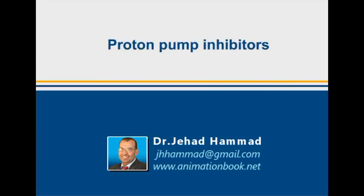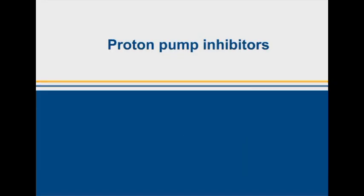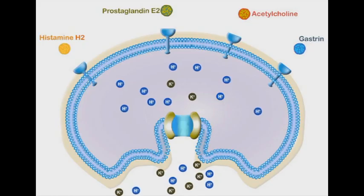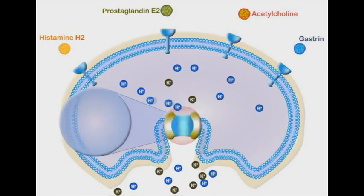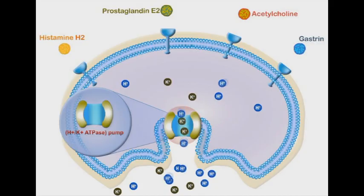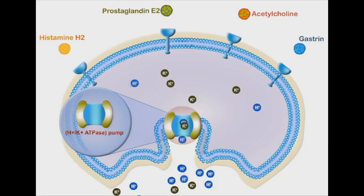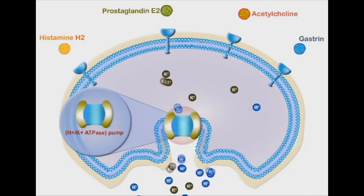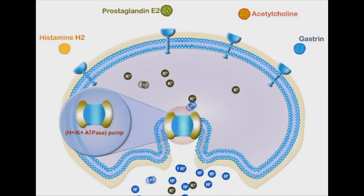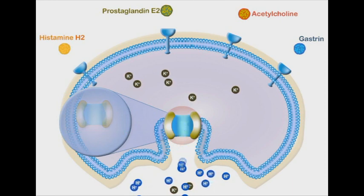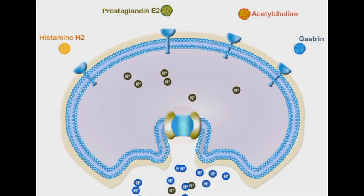Proton pump inhibitors. The main regulator of acid secretion in gastric parietal cells is the hydrogen-potassium ATPase pump, more commonly known as the proton pump. This enzyme system pumps protons from parietal cells into the gastric lumen in exchange for potassium ions, which are transported into parietal cells. Therefore, proton pumps are the main acidifying factor of gastric fluids.